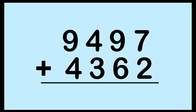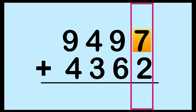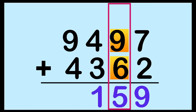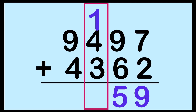How about if we have 9,497 plus 4,362? Again children, we're going to start at the one's place. 7 plus 2 — put 7 on your mind, big number first: 7, 8, 9. We have 9 here. Then let's proceed to the tens place. 9 plus 6 — put 9 on your mind: 9, 10, 11, 12, 13, 14, 15. We have 15 here. So let's regroup 1 to the hundreds place. Let's proceed to the hundreds place. 1 plus 4 — put 4 on your mind: 4, 5. We have 5 here.